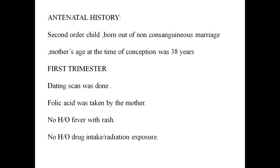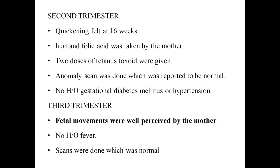Second trimester: quickening felt at 16 weeks. This is important — when a child has hypotonia or muscular issues, the mother may not perceive fetal movements well. Iron and folic acid was taken, two doses of tetanus toxoid given. Anomaly scan was done and reported normal, no history of gestational diabetes or hypertension. Third trimester: fetal movements were well perceived, no history of fever, scans done which were normal.